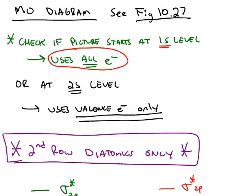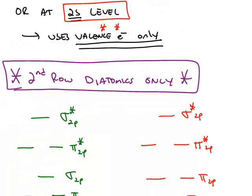Some pictures, like 10.27, start at the 2s level. And that is telling you only use the valence electrons. Because for this class, we're only going to go up to the second row of the periodic table and we're only going to do diatomics.